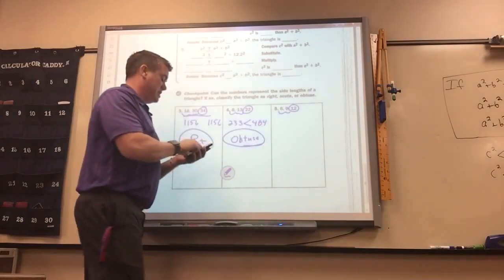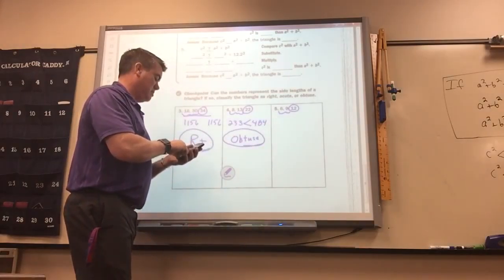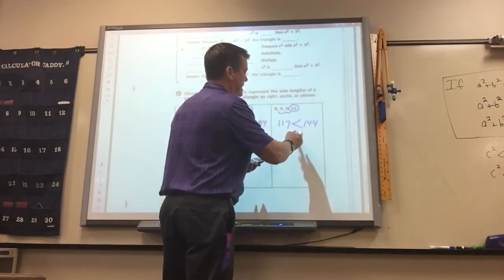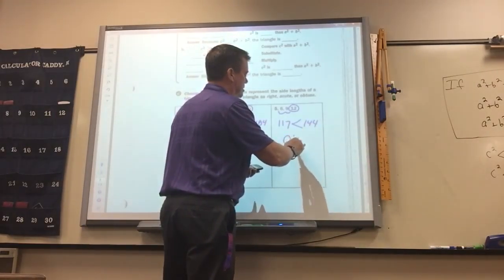6 squared plus 9 squared is 117. 12 squared is 144. That's less, so that is obtuse.